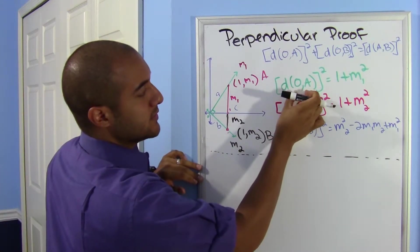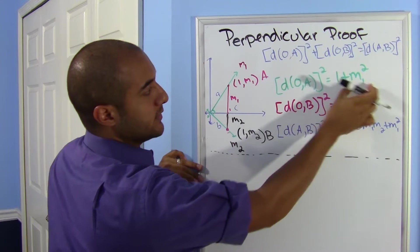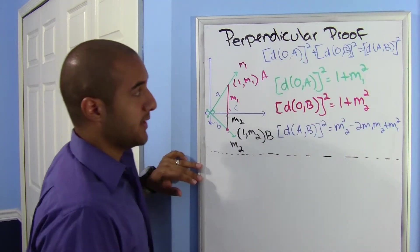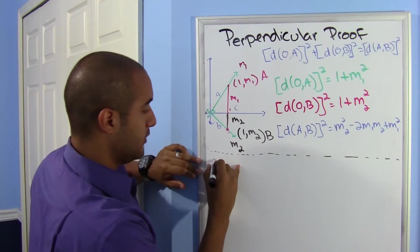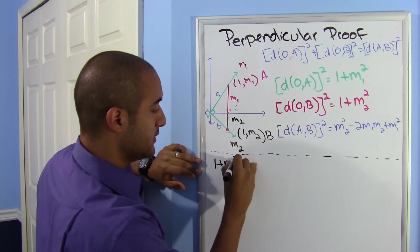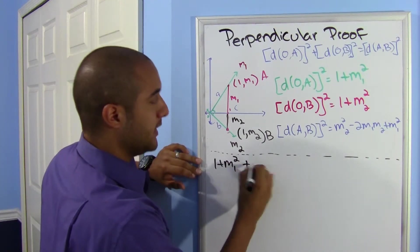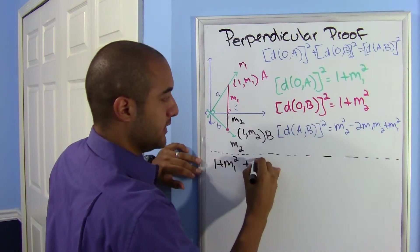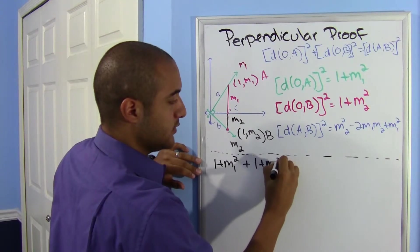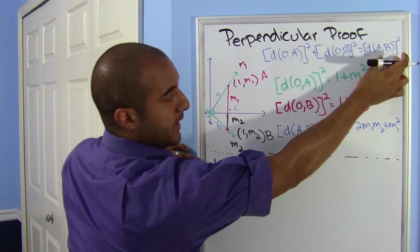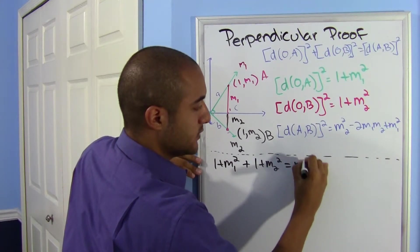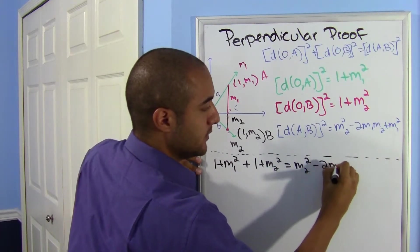All right, all I did was move our information and condensed it. Let's go ahead and substitute. I now know that the distance of OA² is 1 + m1², so I'm going to substitute that into our Pythagorean theorem. And I get 1 + m1² plus now from OB² and I notice this: plus 1 + m2².